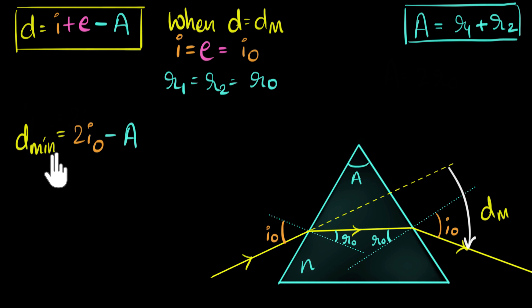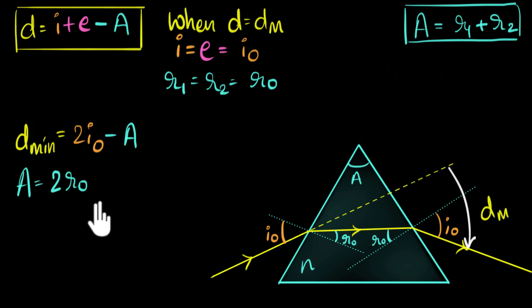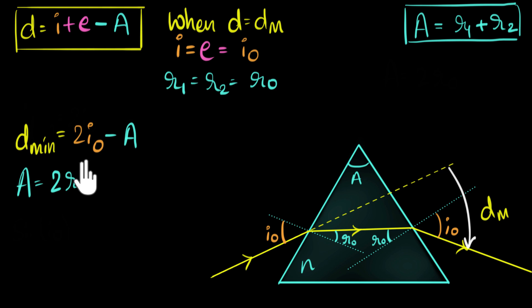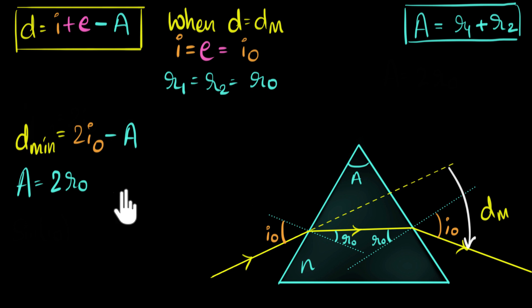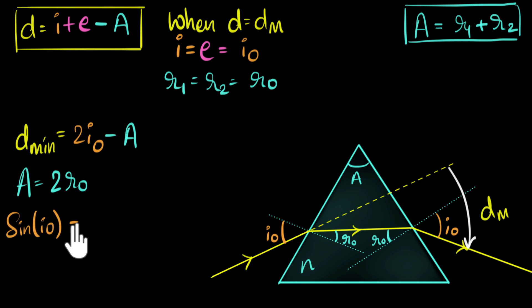We still haven't found what our minimum deviation is because we don't know what I₀ is. But we have another equation: A equals R1 plus R2, so that's 2R₀. Now we can connect I₀ and R₀ by using Snell's law. Applying Snell's law at the first surface: 1 times sine(I₀) equals N times sine(R₀).